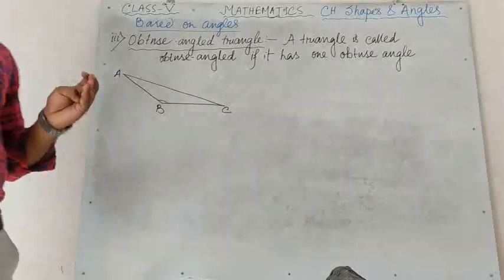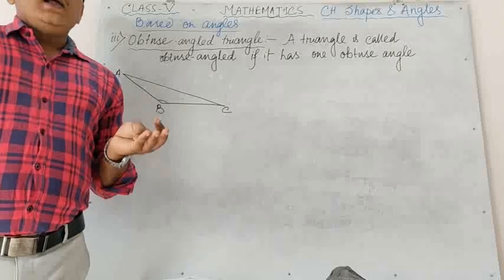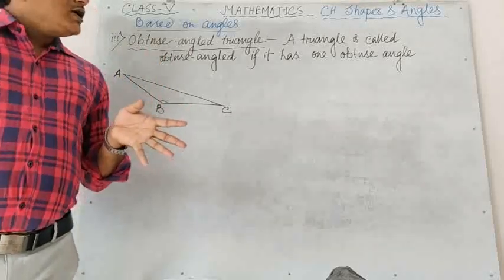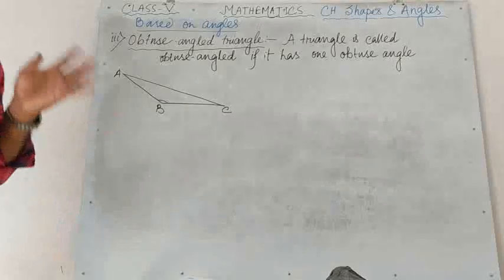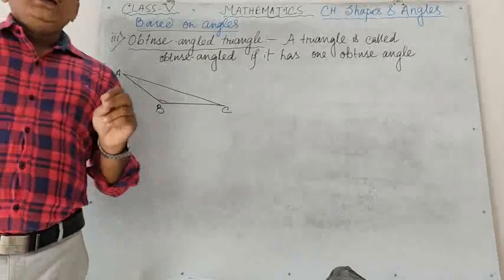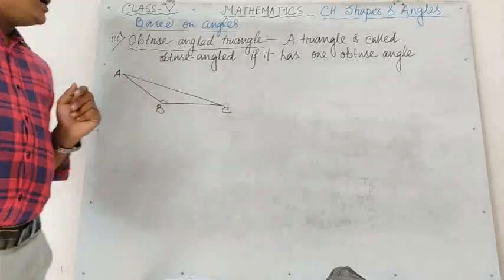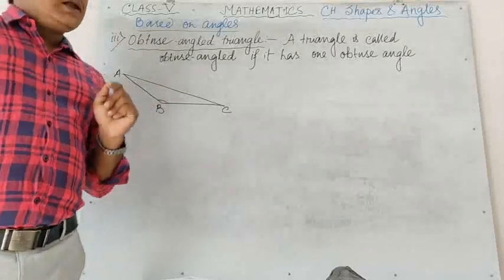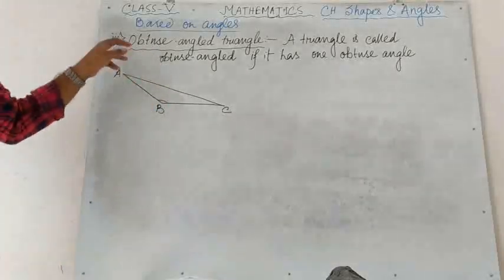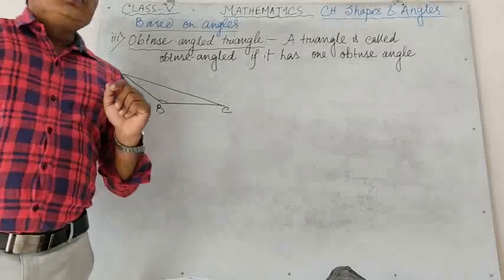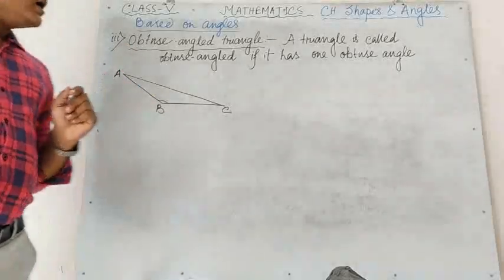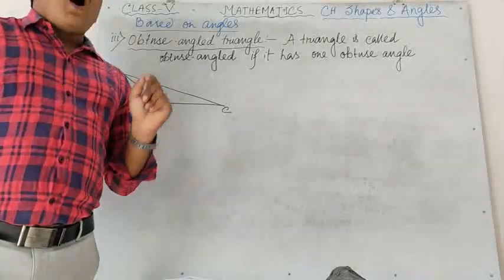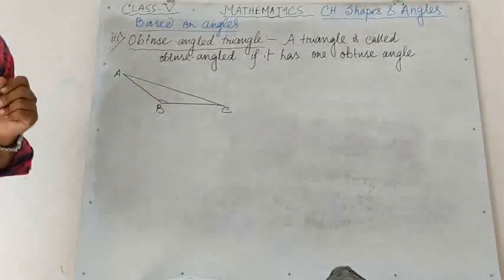So based on angles there are three types of triangle. Number 1: acute angled triangle — the triangle whose all angles are acute. Number 2: right angled triangle — a triangle whose one angle is 90 degree. Number 3: obtuse angled triangle — a triangle that has one obtuse angle.